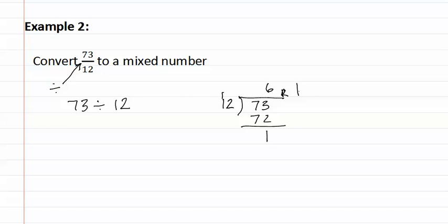Now we have to determine which of these pieces is which. The six is how many times it went in, so that's how many whole pieces there are. There are six whole pieces. Next, we look at the remainder. The remainder was one. This is how many pieces were left over, so we have one out of twelve.